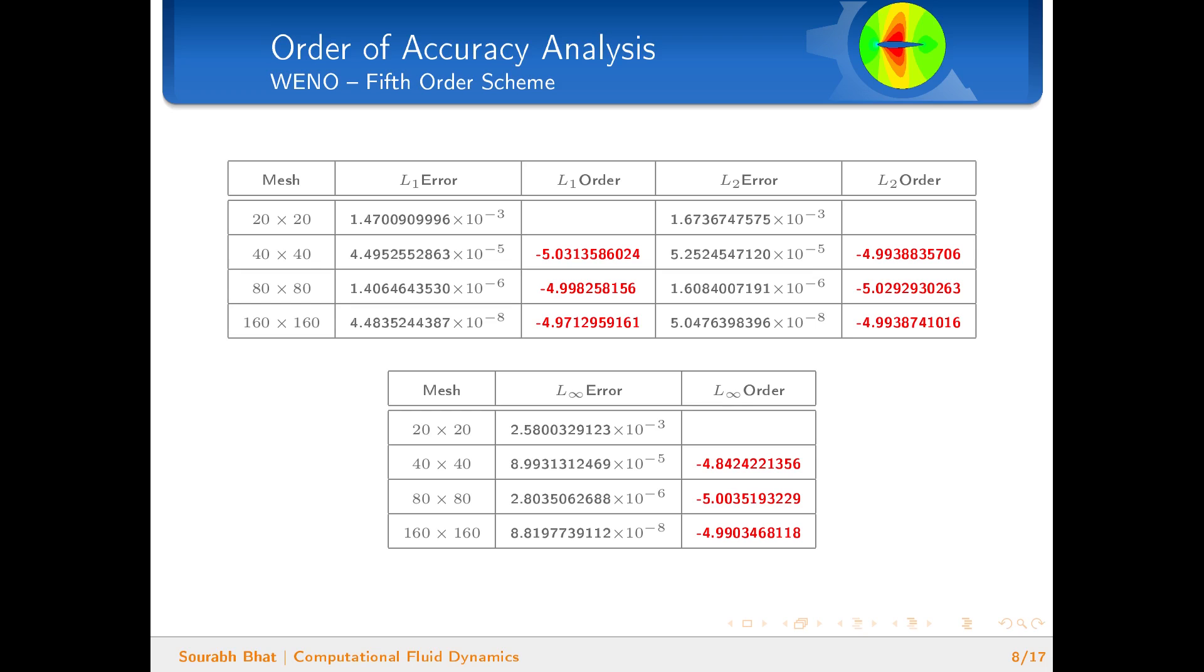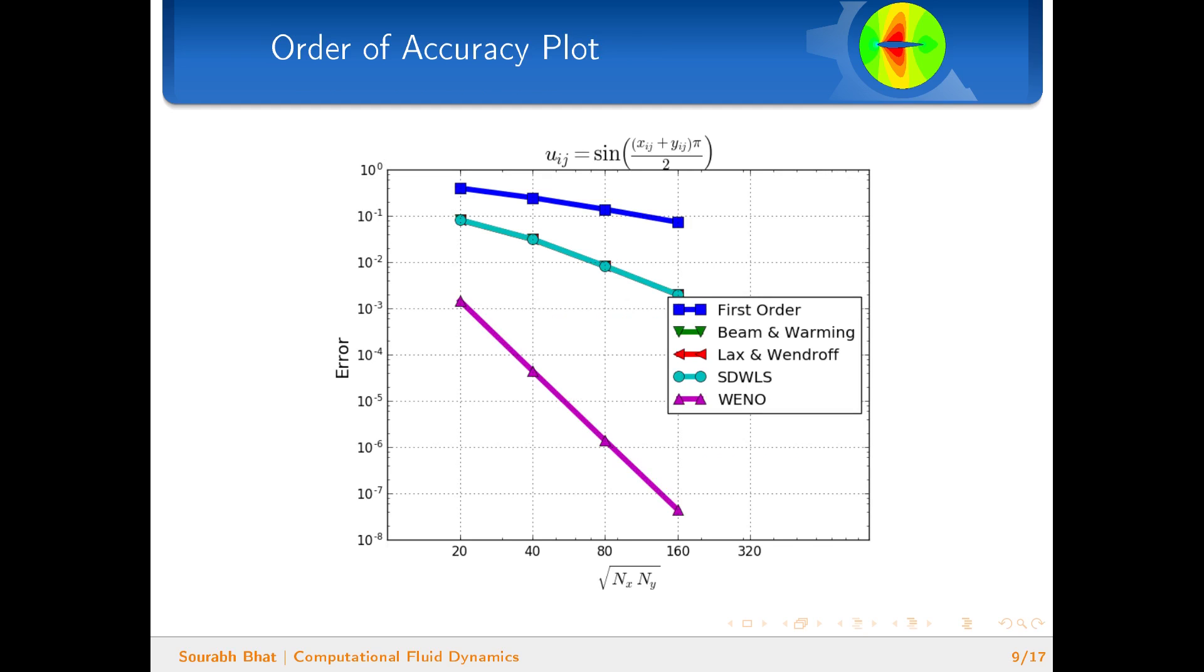Here are the plots, which show error versus the size of the mesh drawn on a log-log plot. We see that the first order scheme has a lower slope compared to the slope of the second order schemes.